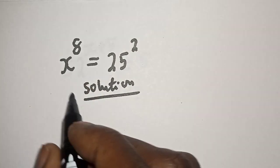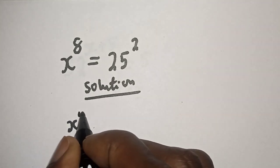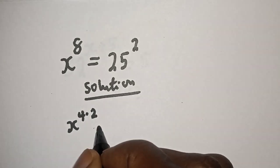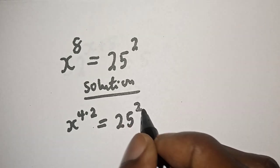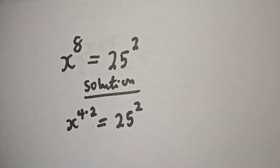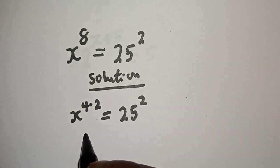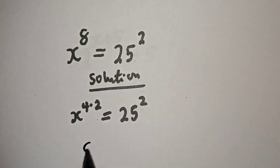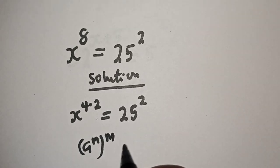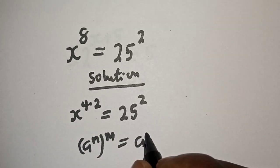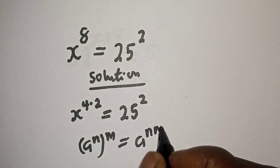s raised to power 8 can be written as s raised to power 4 multiplied by 2, is equal to 25 square. Take note of this exponential rule: a raised to power n, to the power of m, is equal to a raised to power n times m.